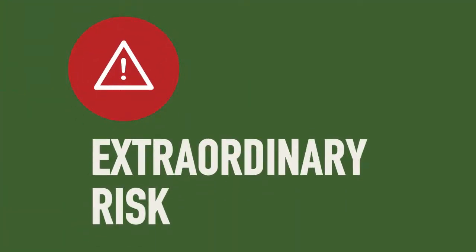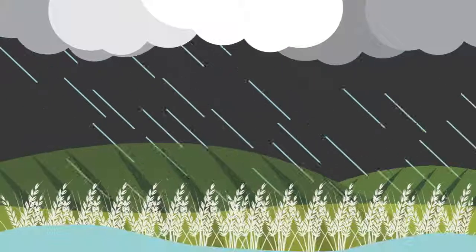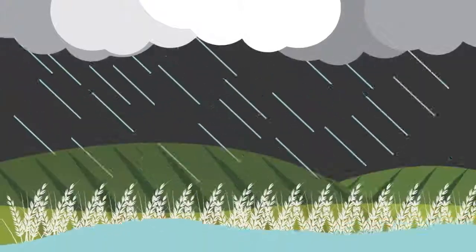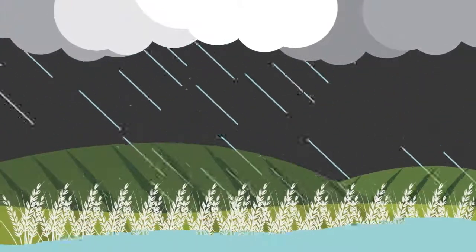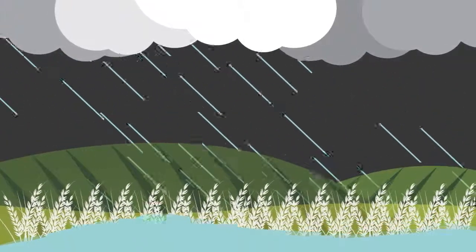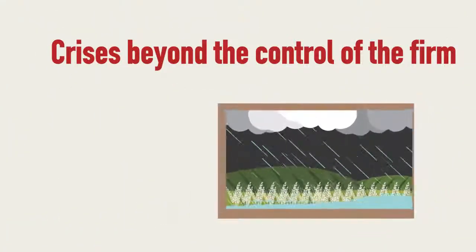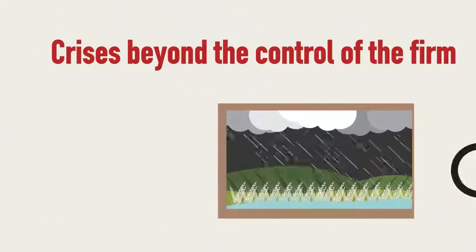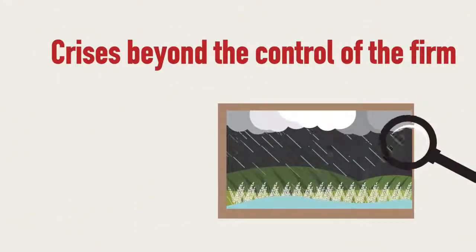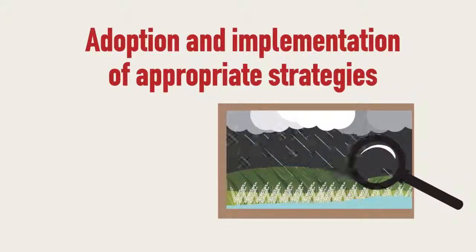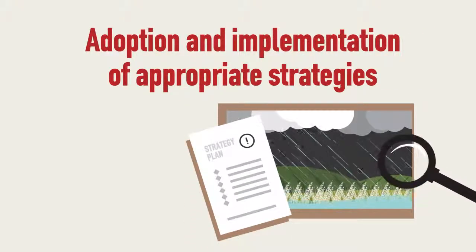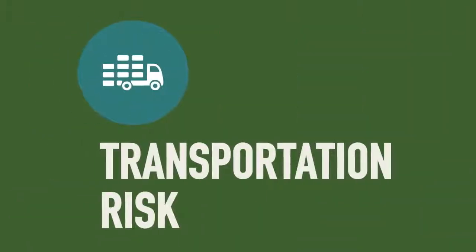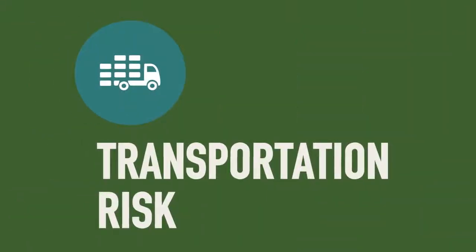Extraordinary Risk: rare but significant risks that might occur and cause major disruption to a firm, such as environmental disasters. These risks involve crises beyond the control of the firm, but whose impact can be reduced by the adoption and implementation of appropriate strategies.